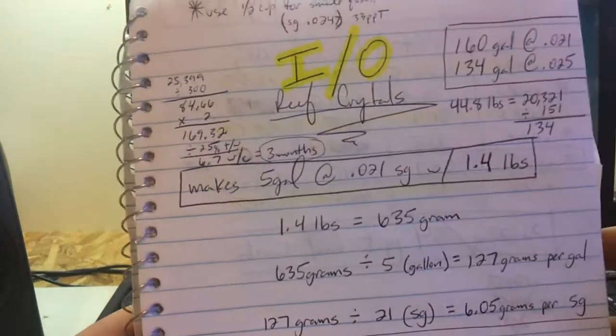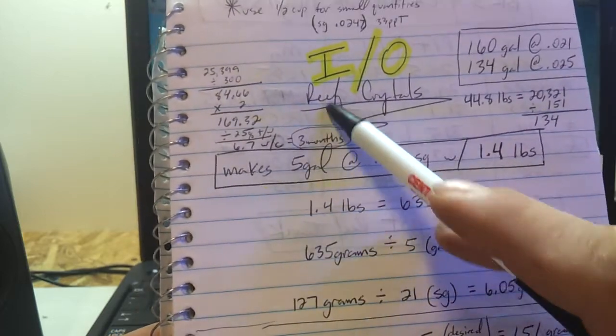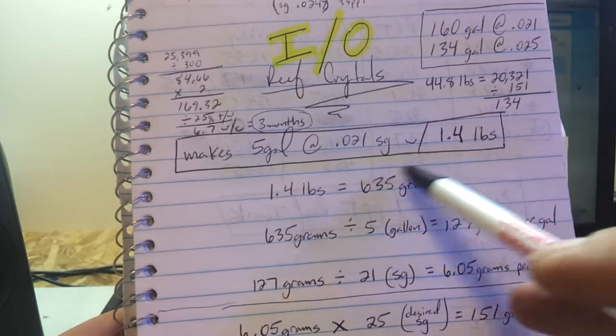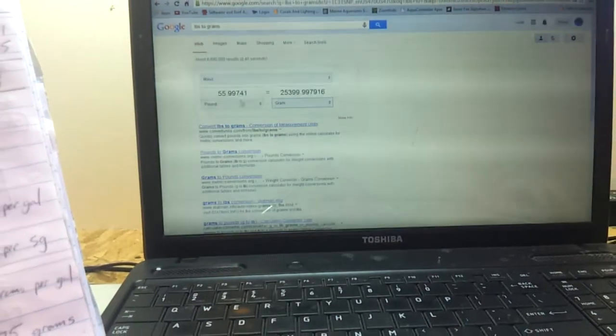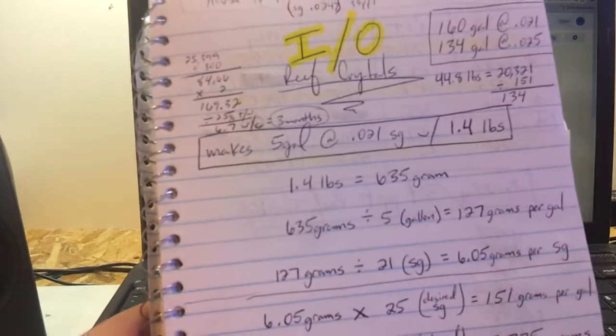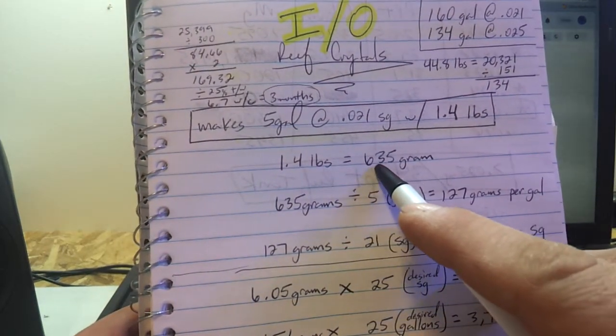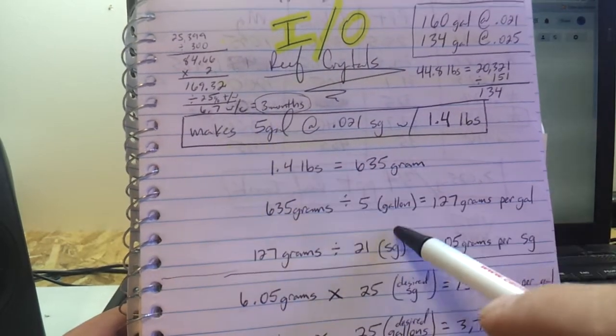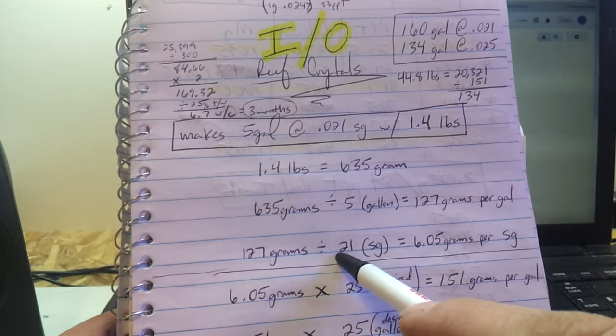So to get to it I made an equation. Excuse my mess with all my little notes but that's the stuff that happens when you're trying to figure stuff out. So the Instant Ocean Reef Crystals makes 5 gallons at 21 specific gravity with 1.4 pounds. So 1.4 pounds actually breaks down into 635 grams. If you want to do this for yourself go to Google and just search for the conversions and they can do all the numbers for you. So 1.4 pounds breaks to 635 grams. Then you take the 635 grams divided by the 5 gallons, you get 127 grams per gallon.